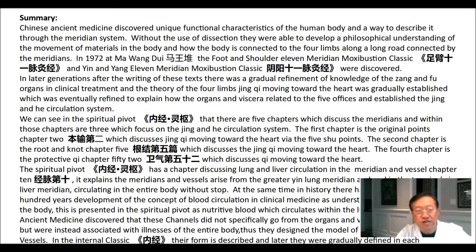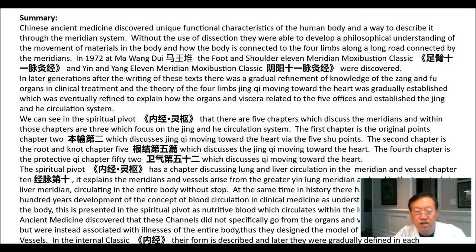Summary: Chinese ancient medicine discovered unique functional characteristics of the human body and a way to describe it through the meridian system. Without the use of dissection, they were able to develop a philosophical understanding of the movement of materials in the body and how the body is connected to the four limbs along a road connected by the meridians. In 1972, at Mawangdui, the foot and shoulder 11 meridian moxibustion classic and yin and yang 11 meridian moxibustion classic were discovered.